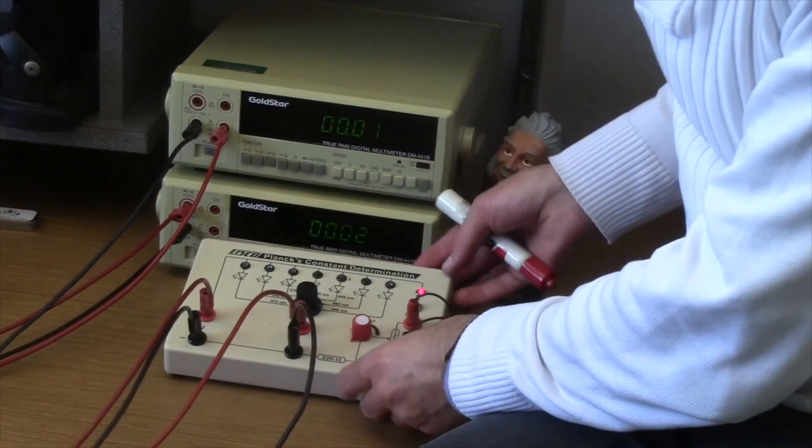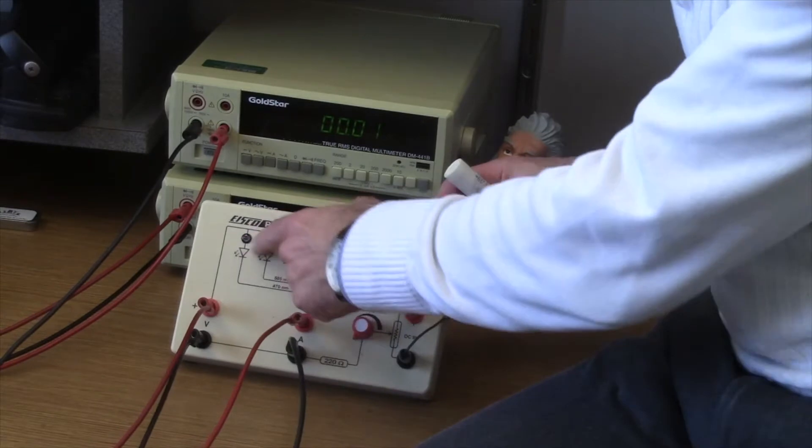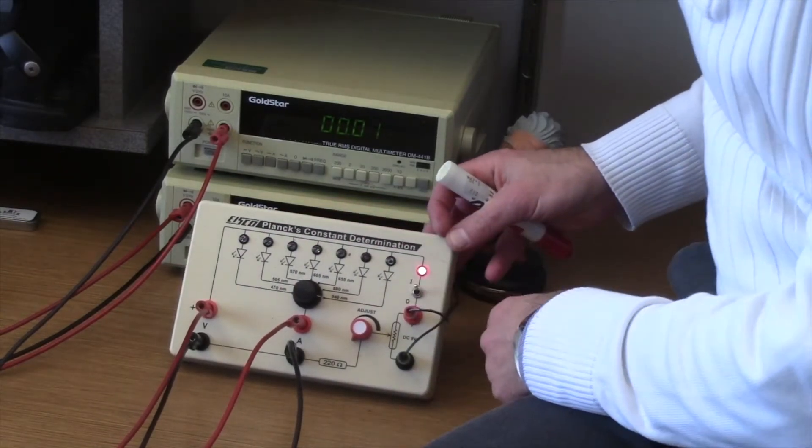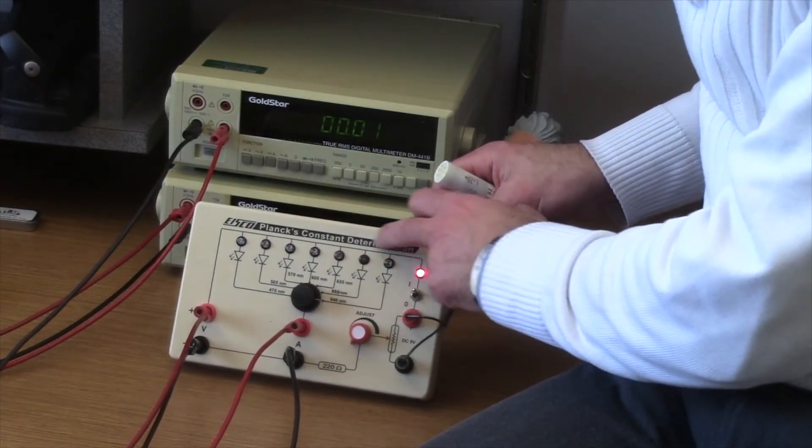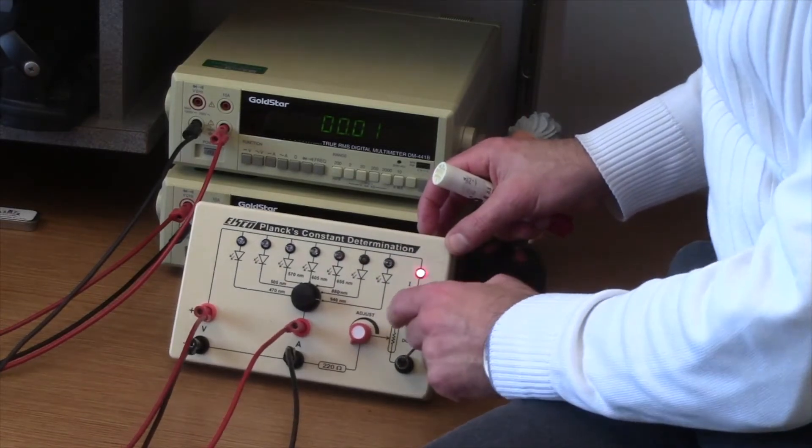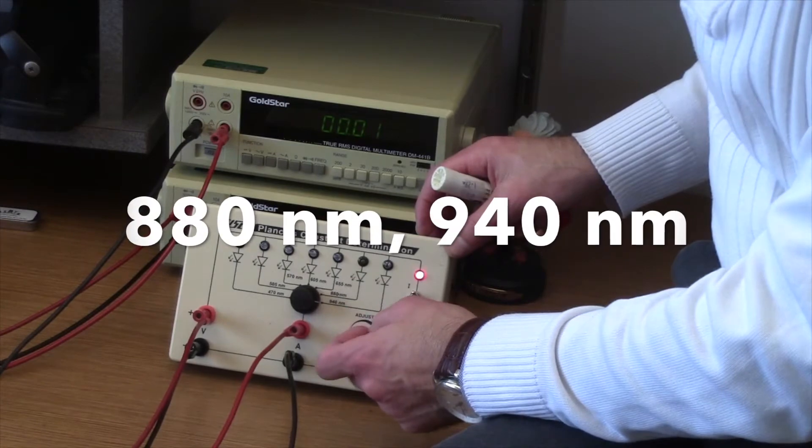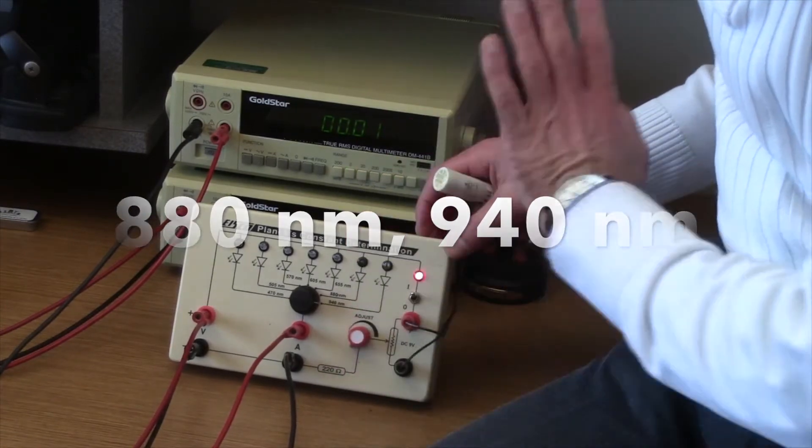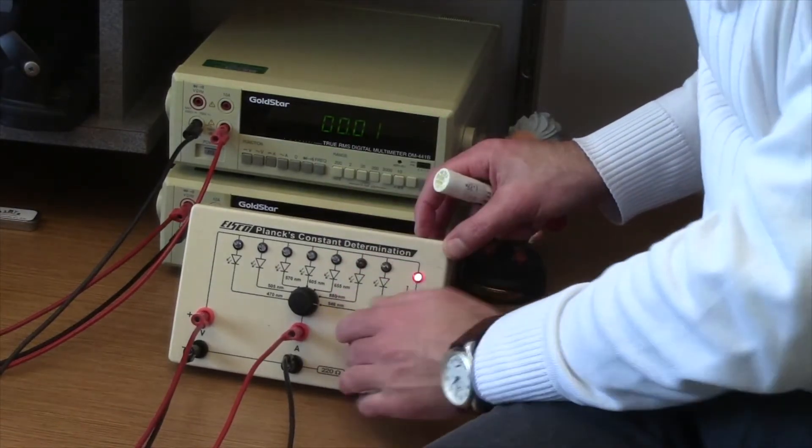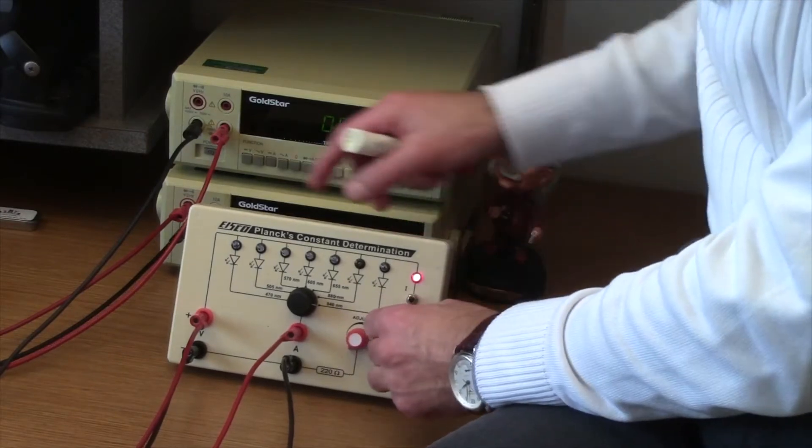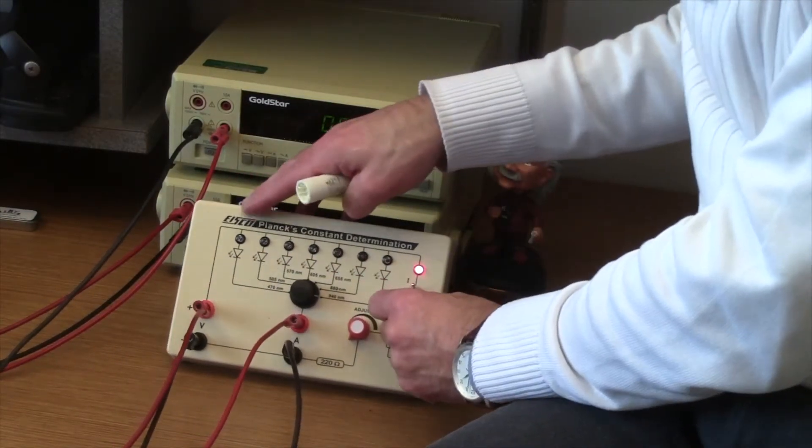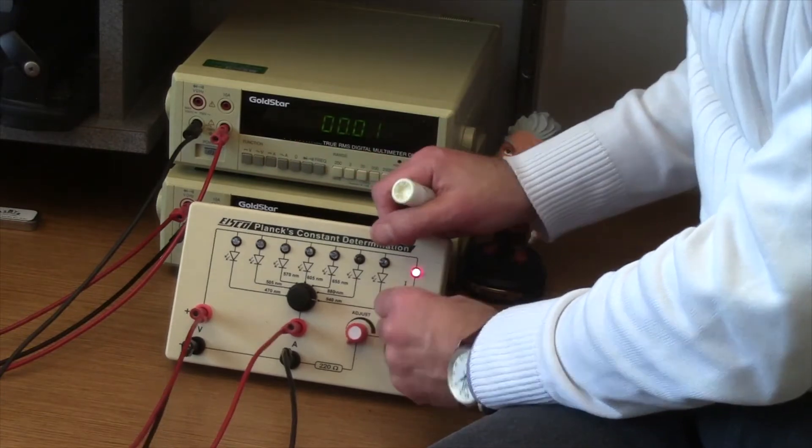This is the experimental equipment that you have for this lab. You have a box with eight different LEDs. Be aware that two of them work in the infrared side of the spectrum—we're talking about 880 nanometers and 949 nanometers—so you cannot see them by eye, but it doesn't mean that they're not working. You're going to increase the current going through the LEDs and register the voltage.